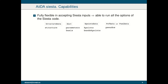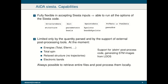Regarding the capabilities, our package is fully flexible in accepting SIESTA inputs, so it is able to run all the operations that the SIESTA code can perform. Of course, the inputs are passed through AiiDA data structures. In particular, we have parameters and basis dictionaries that accept directly the SIESTA input keywords, and this is the reason why we are fully flexible and can run all possible options of the SIESTA code. Therefore, the only limitation we have is on the quantities we can parse and the support for external post-processing tools.